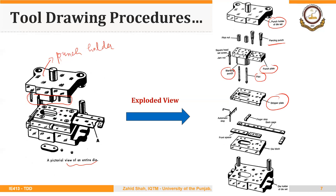There is also a stripper plate shown separately in the exploded view, then an automatic stop that stops the sheet once it is fed from right to left, and then a back gauge and finger stop. We can also see the die block just under the stripper, and at the bottom is the die holder. For many assembly drawings, in order to get a better idea of how and where different parts will fit, we will need an exploded view.